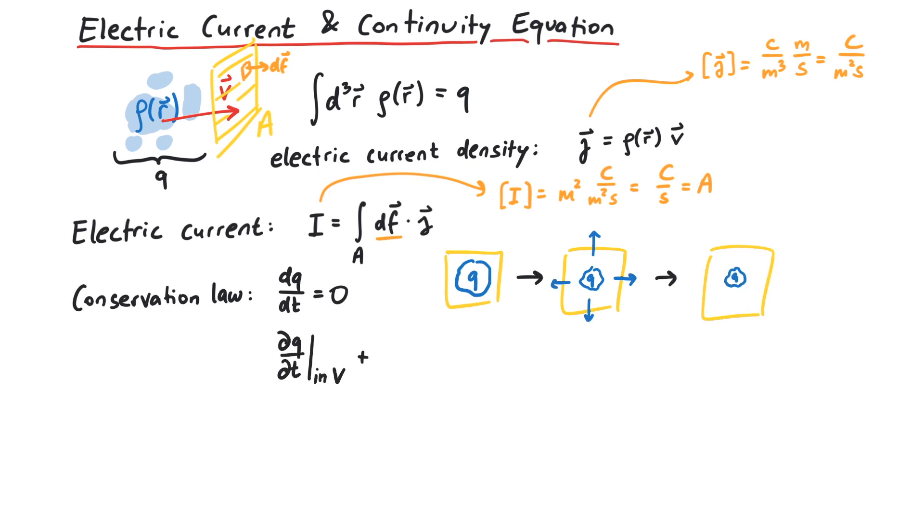Mathematically, the time derivative of q, which is the integral over the time derivative of rho over the volume v, is equal to minus the surface integral over the boundary of v of the current density.